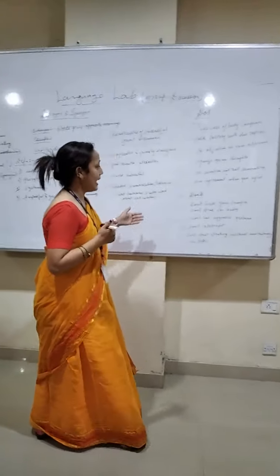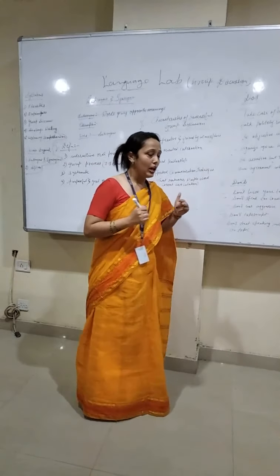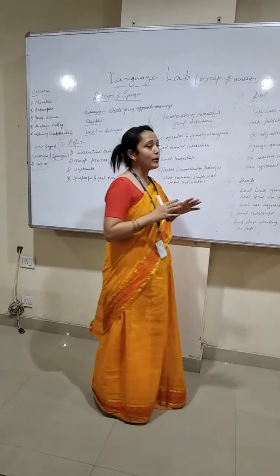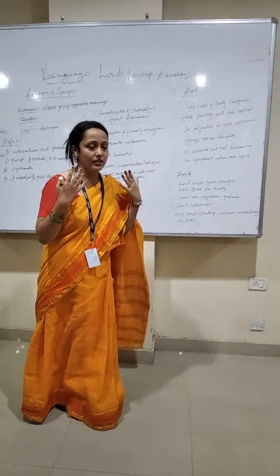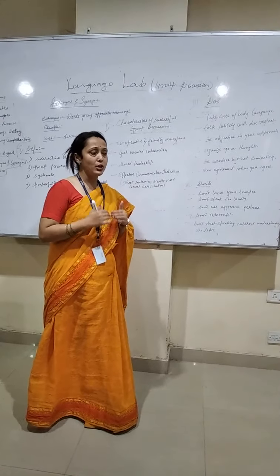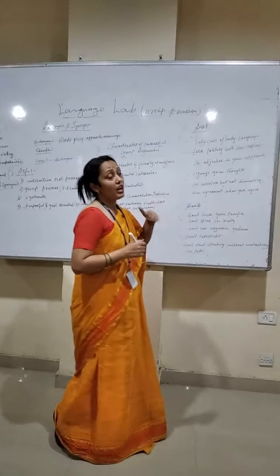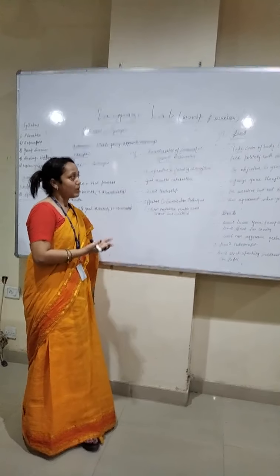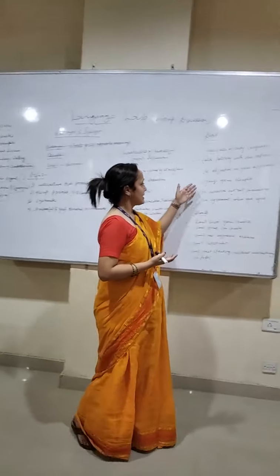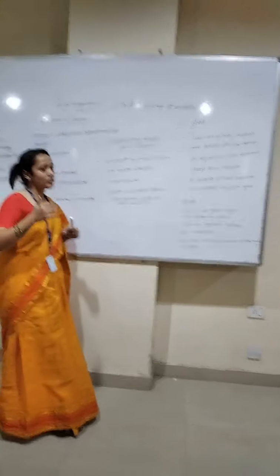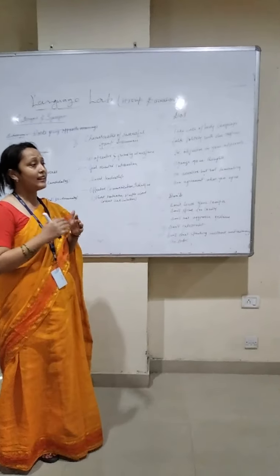Now here are some of the do's and don'ts — what you should do and what you shouldn't in a group discussion. The first do is take care of body language, meaning if you are expressing your views, you should have a proper body language. The second is talk politely with due respect — if another candidate is expressing his views and you are not agreeing, you should respond in a proper way without being aggressive. The third is be objective in your approach — your expression should be very objective to the given topic. The fourth is organize your thoughts: if you have 3 to 4 sentences in your mind, first organize them in a proper way so the first sentence comes first, the second second, and the last at last.